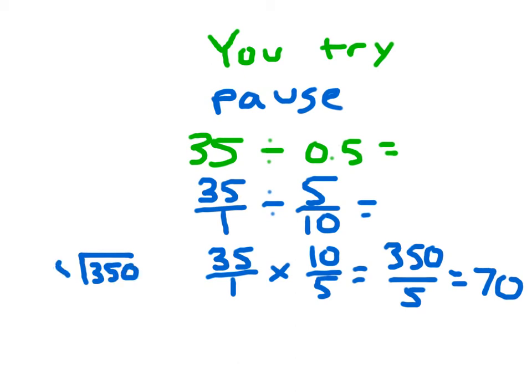350 divided by 5 is 70. And here's my work for that, if you needed to do it in this manner. So my answer is 70. Read that whole number sentence with me: 35 divided by 5 tenths equals 70.